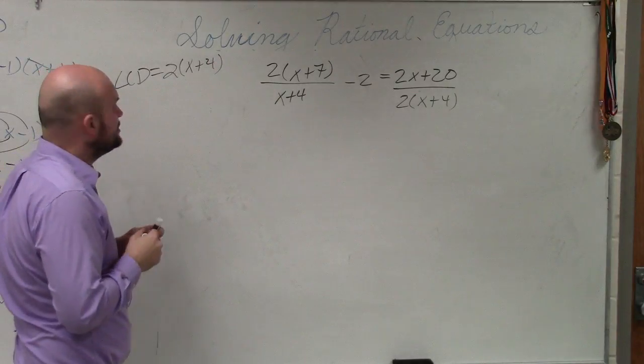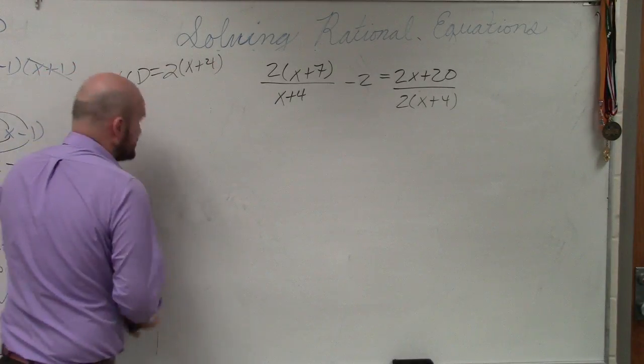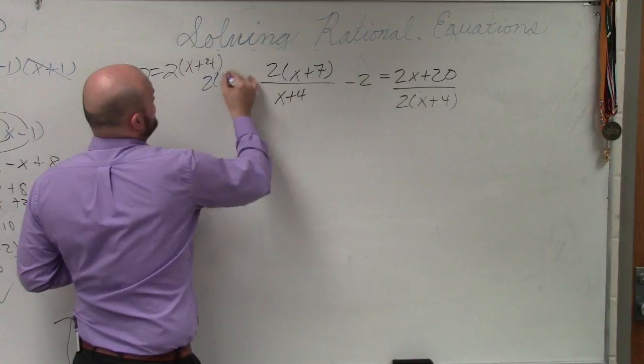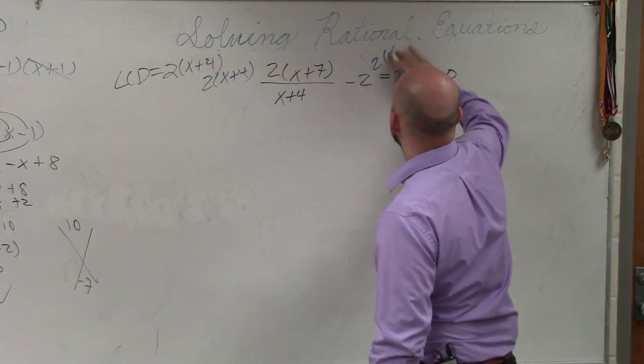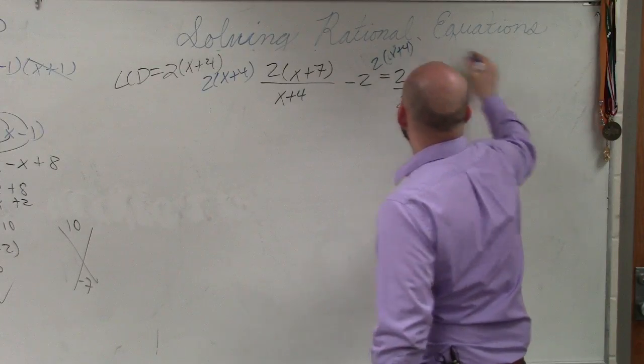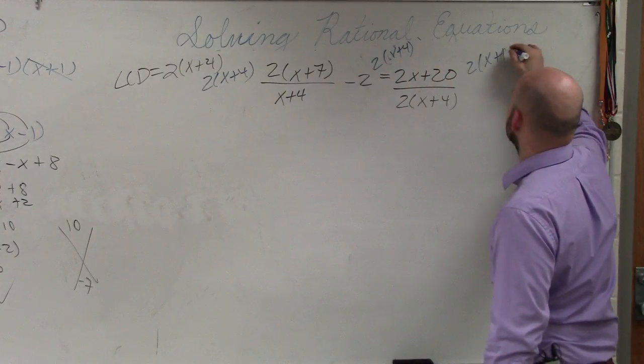So all I need to do when I multiply that times every single term: 2(x+4), I multiply this 2(x+4), and then this one, 2(x+4).